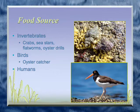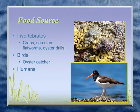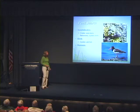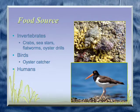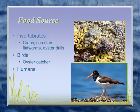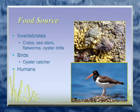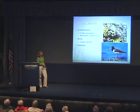Invertebrates find oysters particularly tasty. They like them young when the shell is still thin. Crabs are big predators — all species of crabs — on oysters. As are sea stars, flatworms, and oyster drills. This is a picture of an oyster drill and the eggs it lays on oysters — it just drills down and sucks the contents out. The oyster catcher is usually seen around oyster bars and is considered an oyster predator. And then we have the ultimate oyster predator, which is us.